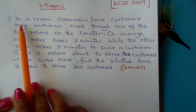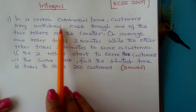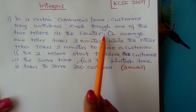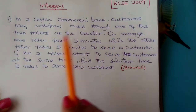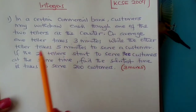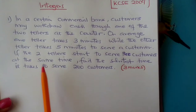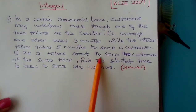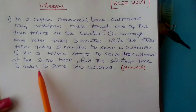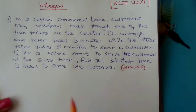In a certain commercial bank, customers may withdraw cash through one of the two tellers at the counter. On average, one teller takes three minutes while the other teller takes five minutes to serve a customer. If the two tellers start to serve the customers at the same time, find the shortest time it takes to serve 200 customers.